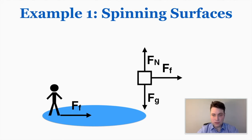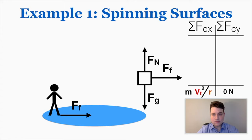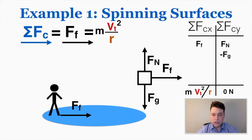Making a force table — and the centripetal force is just the net force on this person, it's not a type of force — the centripetal force in the x direction must equal mv squared over r, because it's a horizontal circle, and in the y direction it must equal zero. So the force of gravity and the normal cancel out, and the only thing happening in the x direction is friction. Therefore, the force of friction equals mv squared over r.